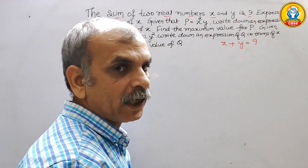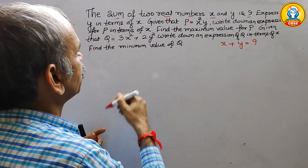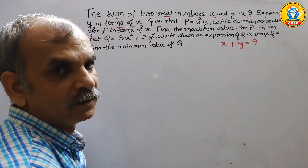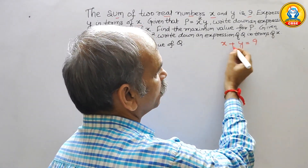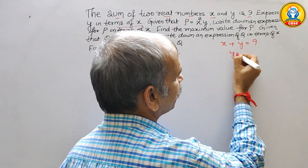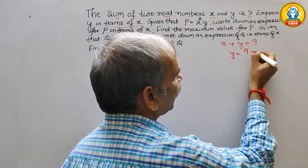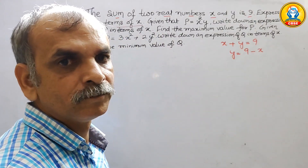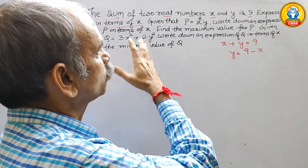They have told us to express y in terms of x. So y in terms of x is: y is equal to 9 minus x. The first part is done.